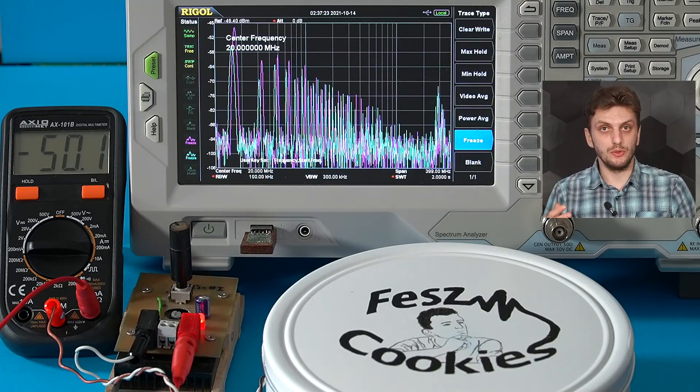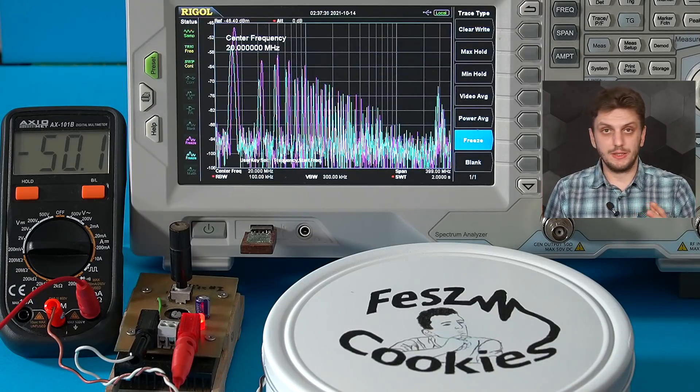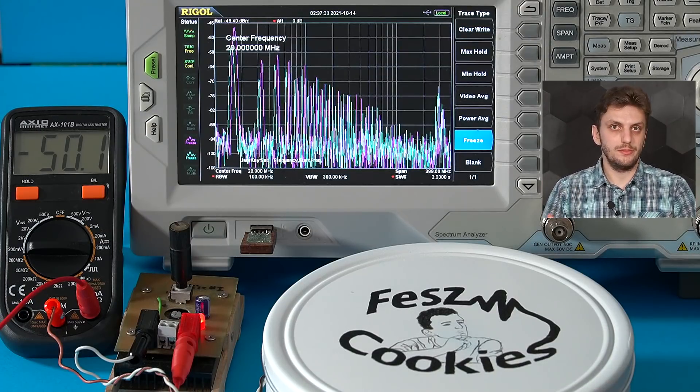So by keeping just the output loop small, we're getting almost exactly the same thing as we did with keeping all of the loops small. So the output loop, so the hot loop in the case of the boost converter, is the most critical, and keeping this one small will bring the most amount of benefit.